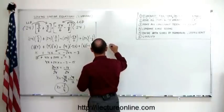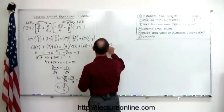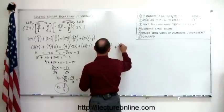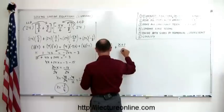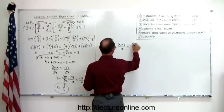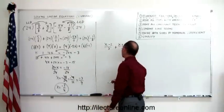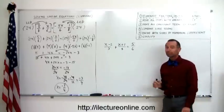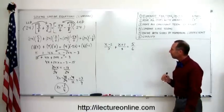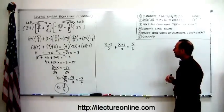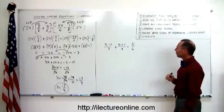We have the equation x minus 2 over 3, plus x plus 1 over 8, equals 5 over 6. We have a linear equation, but it has fractions, and we have to get rid of the fractions somehow.